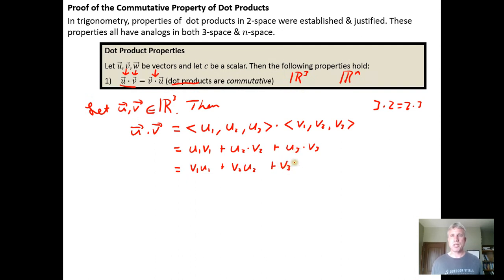And then what we want to recognize is that this is exactly what we would get if we took the product v1, v2, v3 dot u1, u2, u3, which is exactly the dot product of v and u. So we've shown that the dot products are commutative.